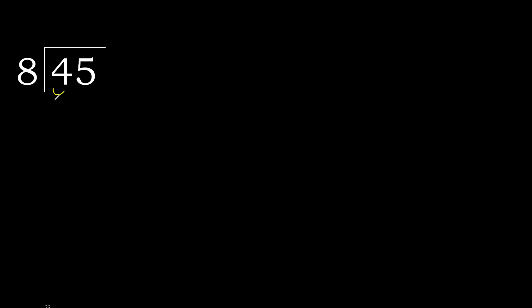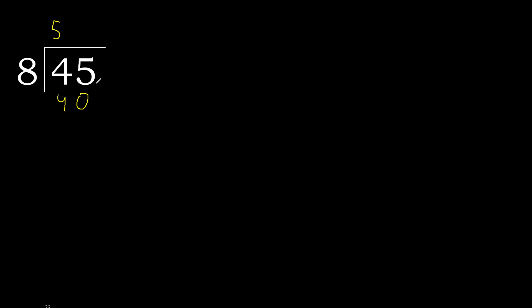45 divided by 8. 4 is less, therefore next. 45 is not less, therefore with 45. 8 multiplied by which number is nearest to 45 but not greater? 8 multiplied by 6 is greater, so multiplied by 5 — 40 is not greater.